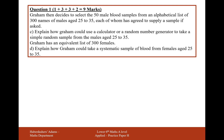Graham has an equivalent list of 300 female students. Explain how Graham could use a systematic sample of blood from females aged 25 to 35. If he's looking for 50 females out of 300, that's every 6th female. So a systematic sample here would go through that list and select every 6th female. You'd have to start at a random value — using a random number generator, select the first female at random and then every 6th one from there, circling back around the list if needed.